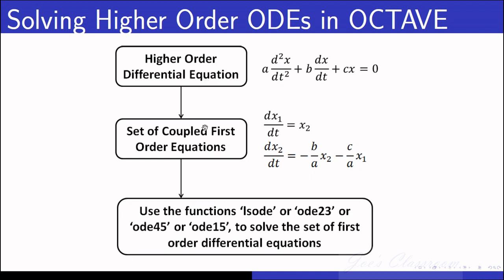The first thing you have to do is break the given higher order differential equation into a set of coupled first order differential equations. For example, this second order differential equation is transformed into two first order differential equations that are coupled. When I say coupled, I mean that x2 varies with respect to time and the variation of x1 with respect to time depends on x2.